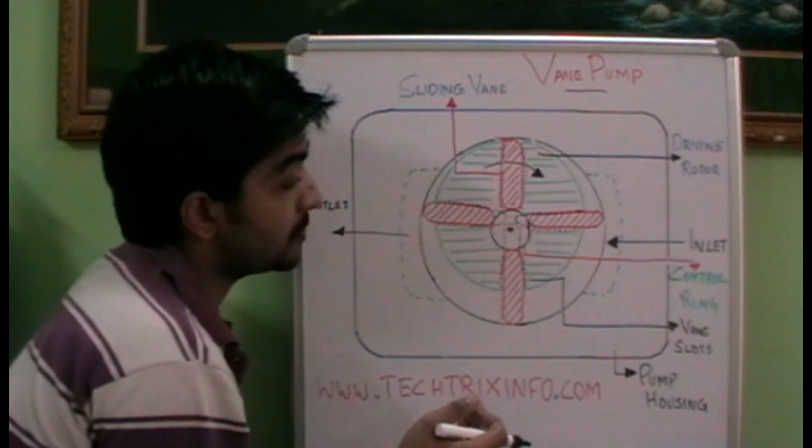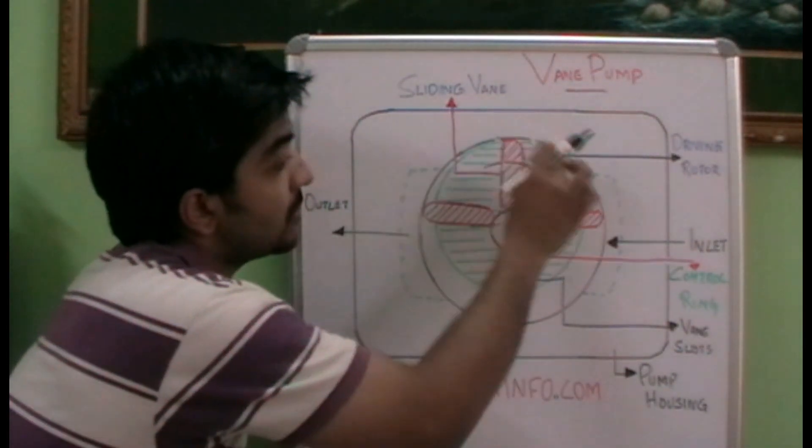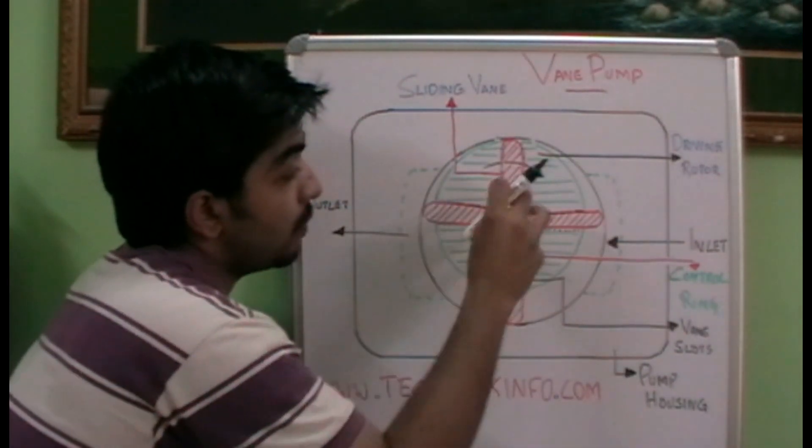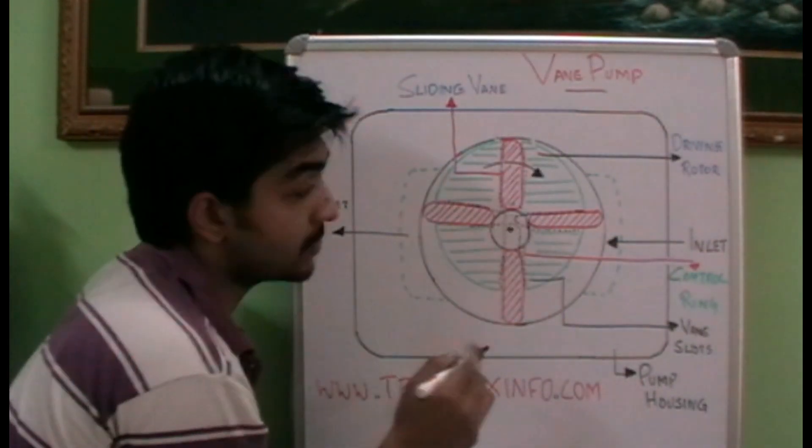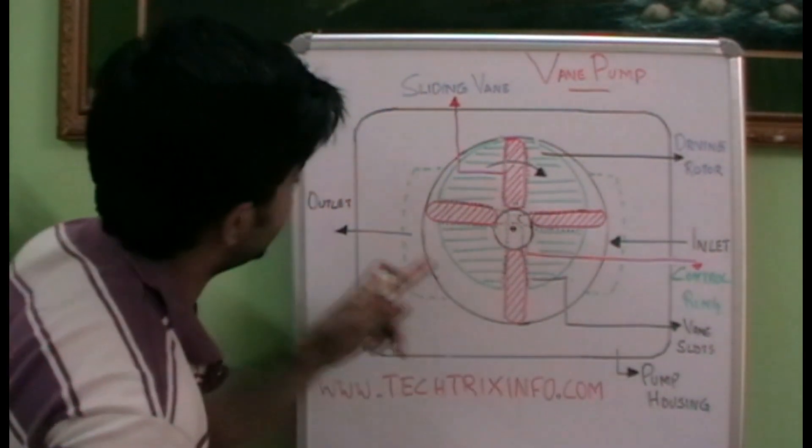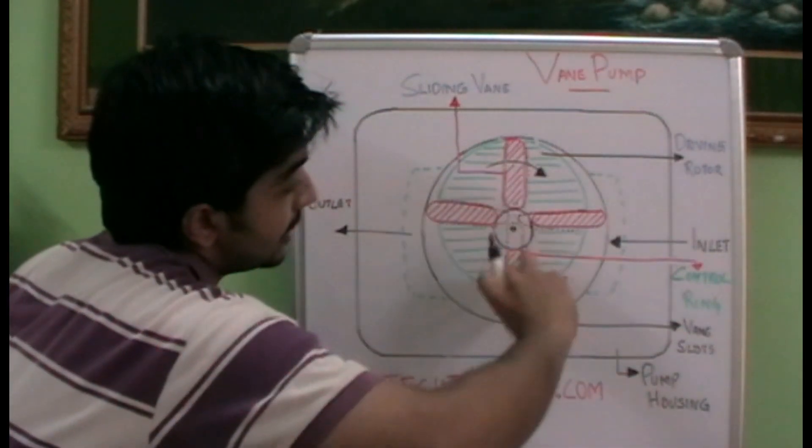So due to the centrifugal force you can see these vanes are connected towards the outer ring or the pump housing outer portion with the help of this control ring. So it is fixed towards the outer portion which traps the oil and sweeps it away towards the outlet port, and when it further rotates at this portion we can see...